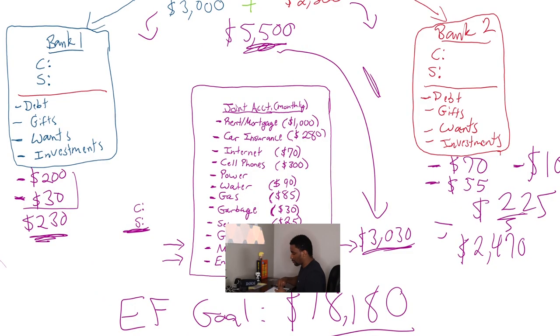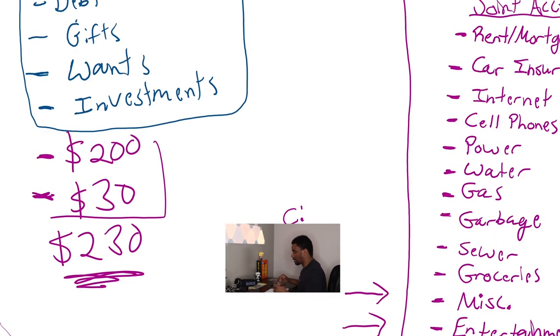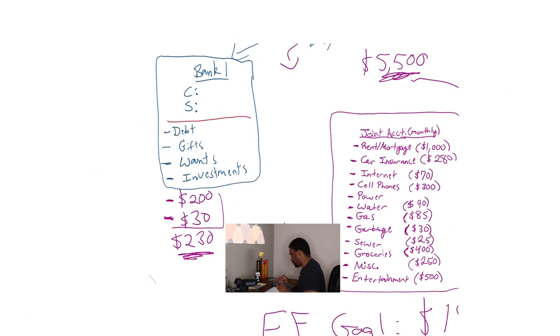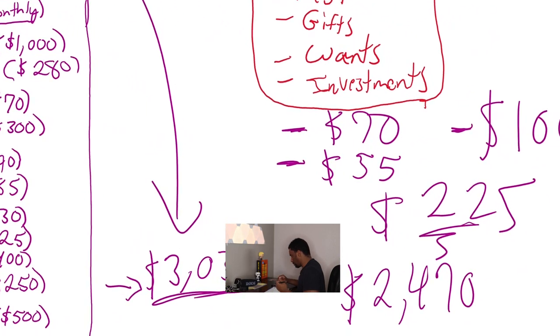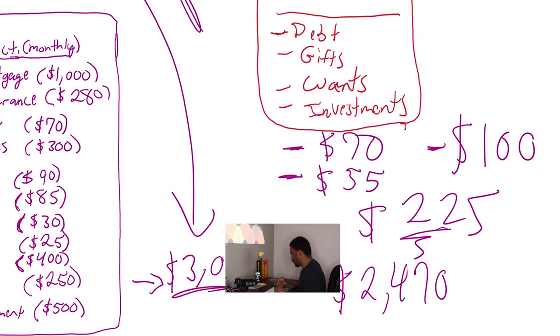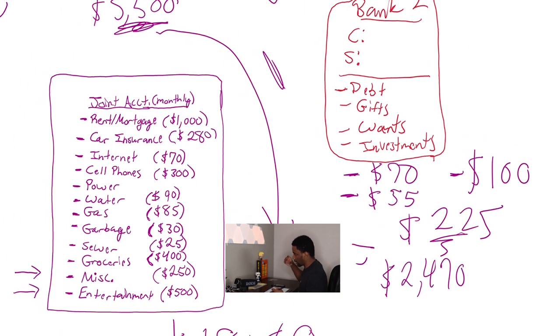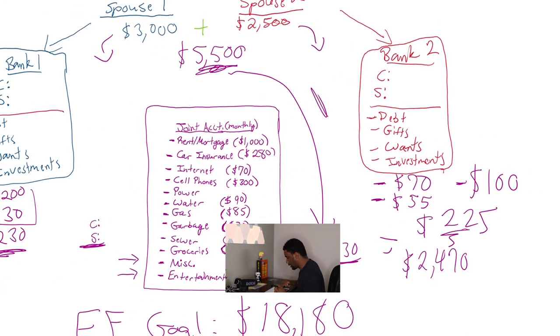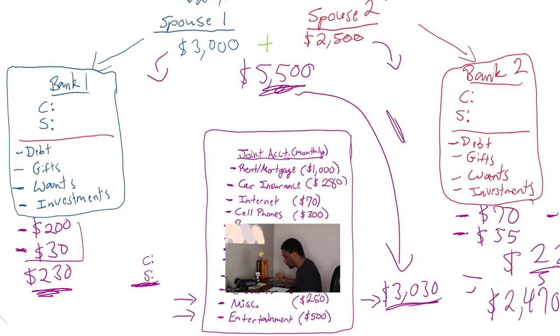So this is part three, actually creating the emergency fund and deciding how much money goes into the joint account per person. So as we talked about before, he's paying his $200, and he's paying his $30 for his debt and for his haircut. And then, she's absolutely paying $225 per month between getting her hair done, getting her nails done, and also investing $100 in the stock market.